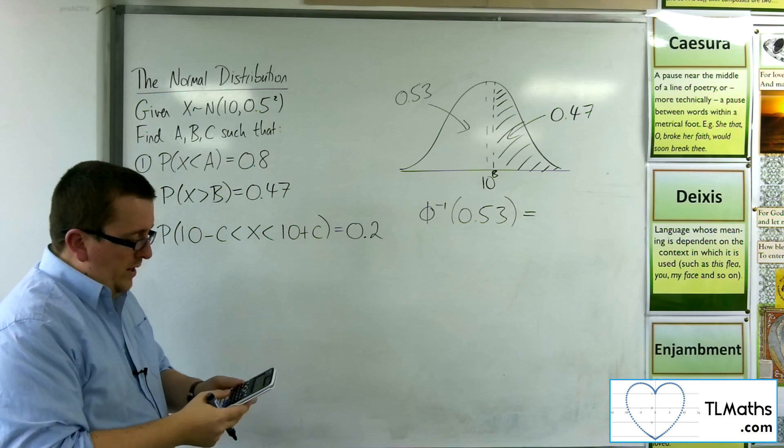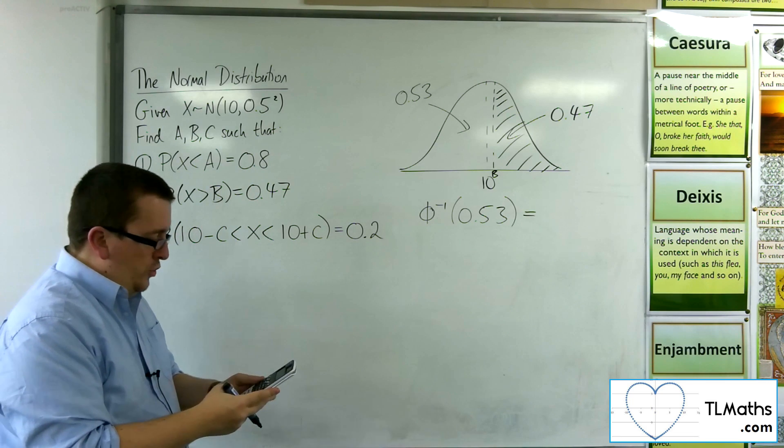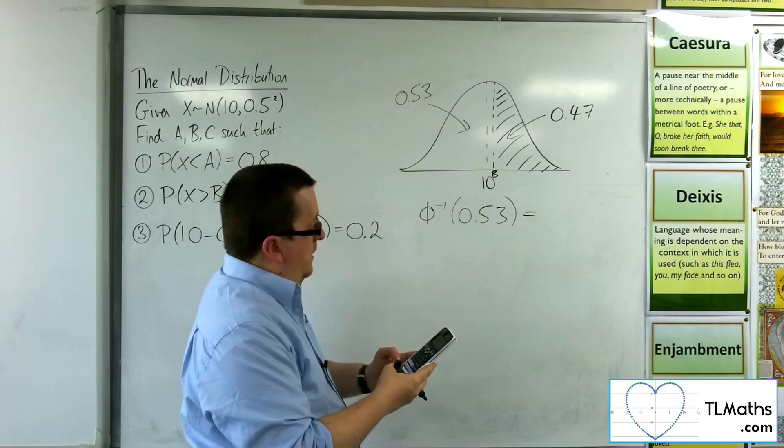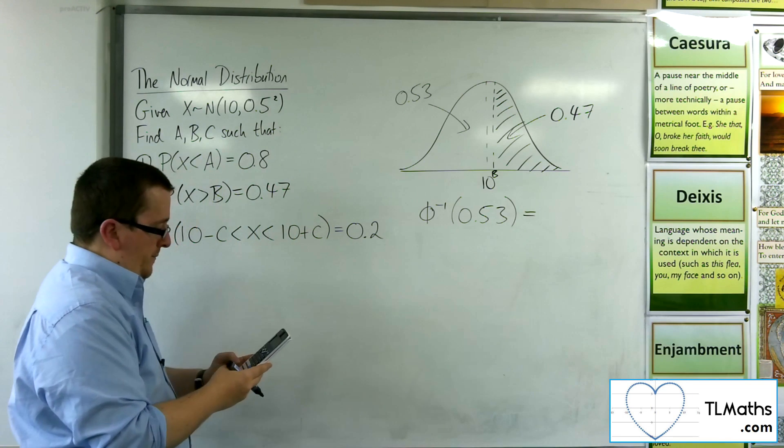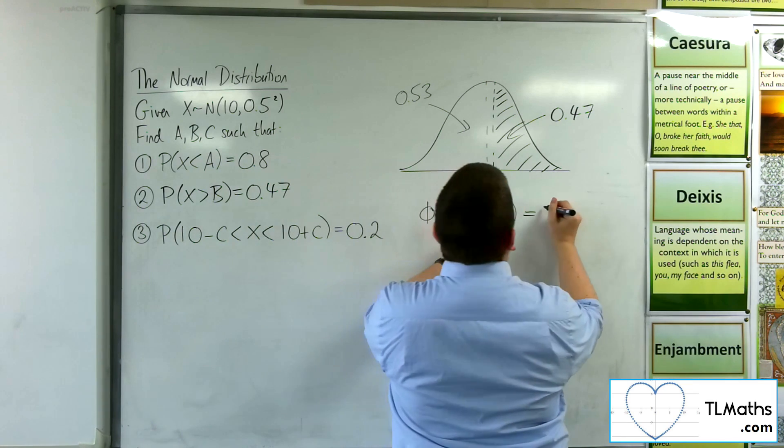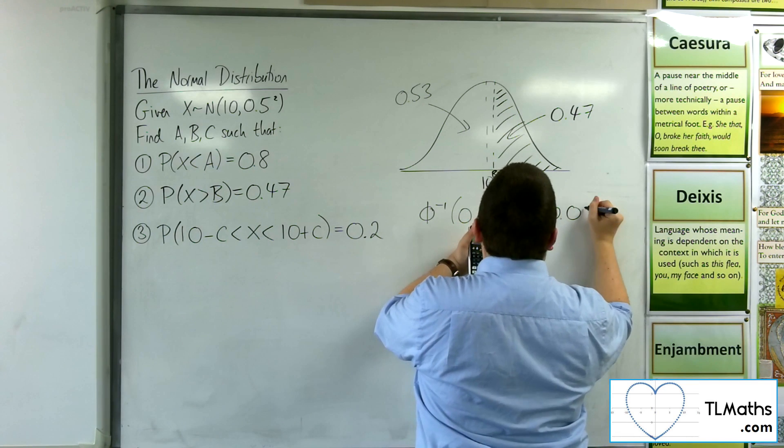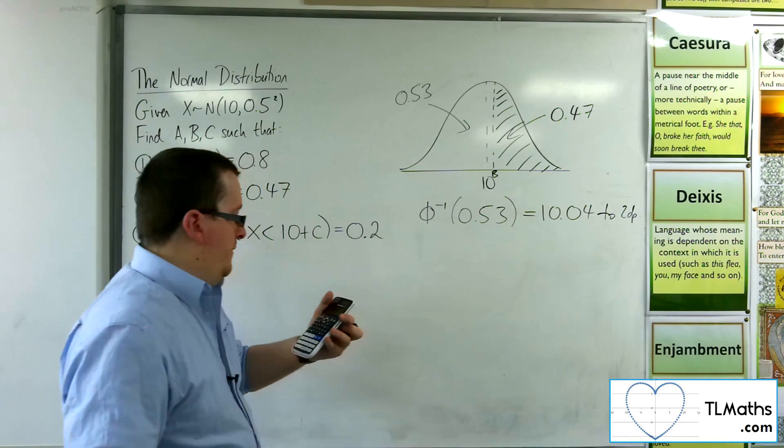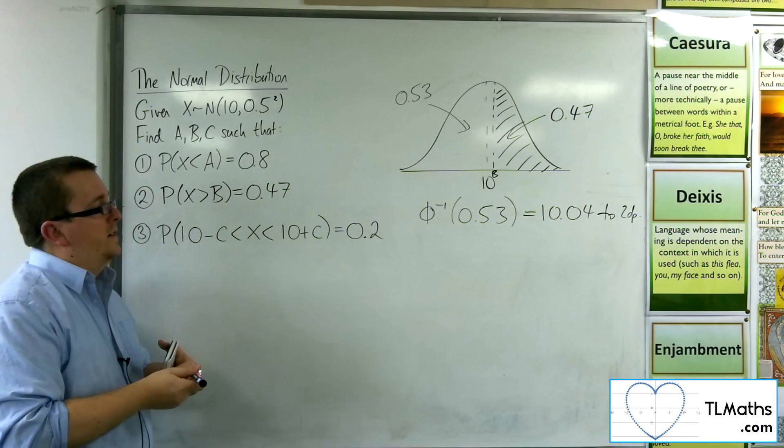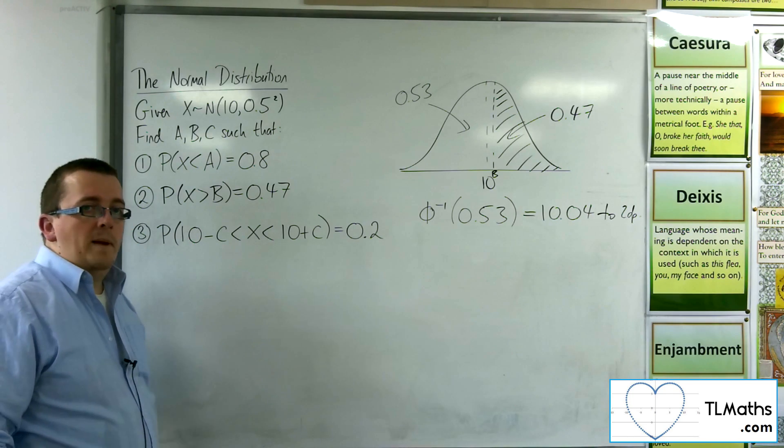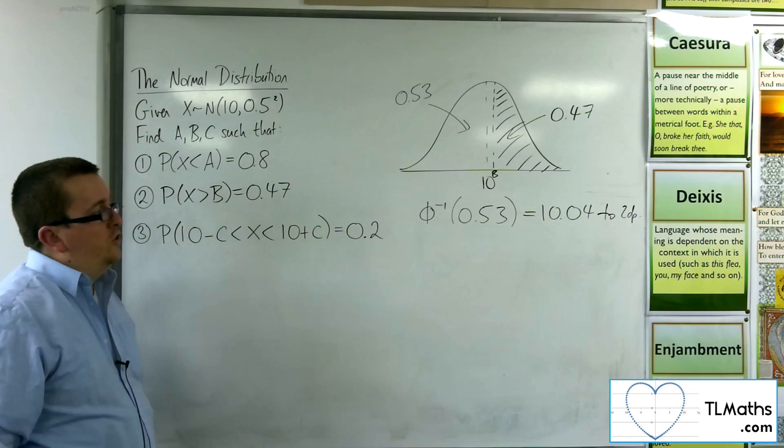So on our calculator, we go to the inverse norm function. And the area is 0.53. Standard deviation was 0.5. And the mean was 10. And that gives us 10.04 to two decimal places. So just a little bit along from the mean, as our diagram can show.